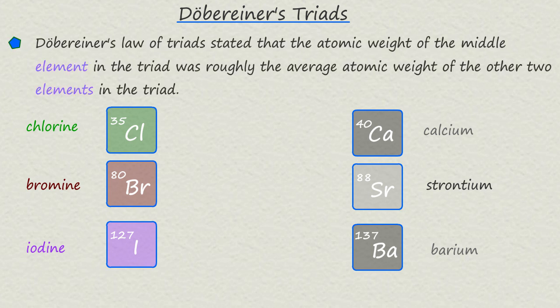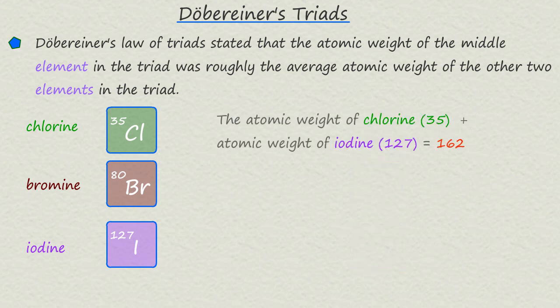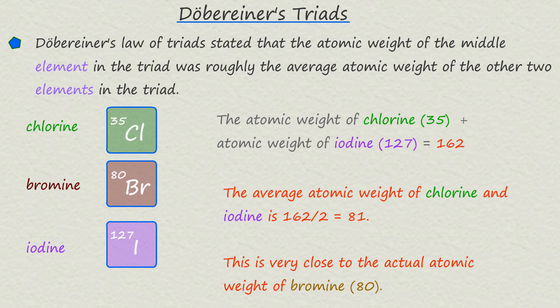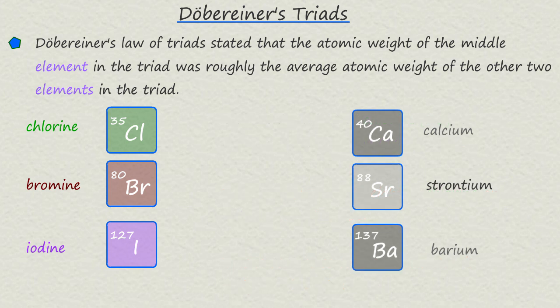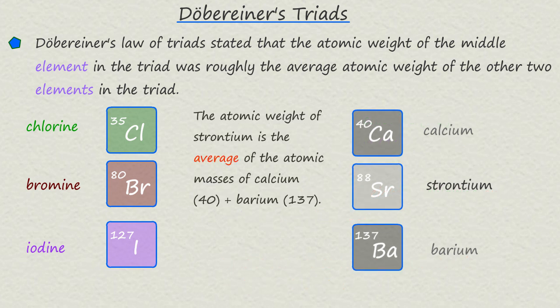One of Döbereiner's most noticeable contributions was the discovery of the law of triads, where the atomic weight of the middle element in a triad was roughly the average of the atomic weights of the other two elements. For example, in the triad containing chlorine, bromine and iodine, Döbereiner noticed that the atomic weight of bromine is approximately the average of chlorine and iodine. While in the triad containing calcium, strontium and barium, the atomic weight of the middle element, strontium, is approximately the average of the masses of calcium and barium.